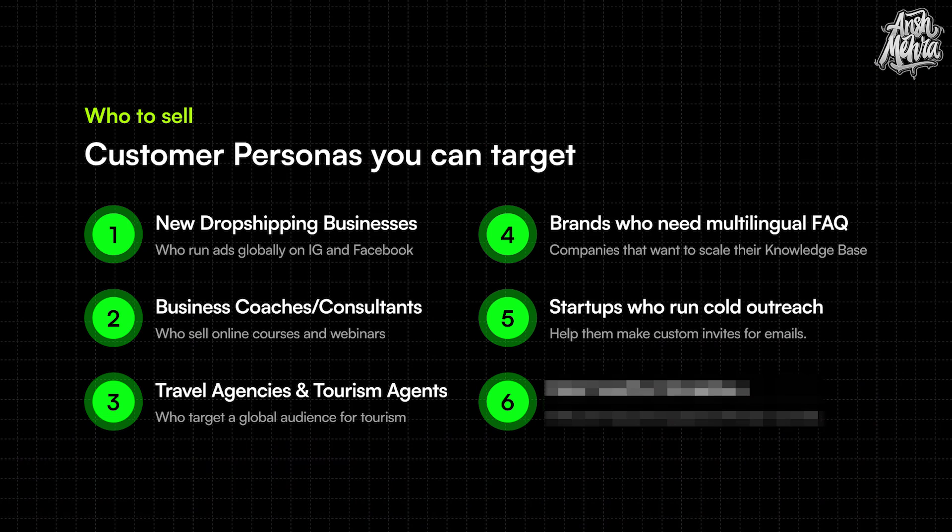Number five: startups that want to run cold outreach. There are so many emails I get from startups where they are recording themselves on a Loom and sending me the video. You can go to these people and say that instead of you spending time recording these specific invite videos, you can always create custom videos using AI and then put those in your email. A lot of companies are actually looking for this service.